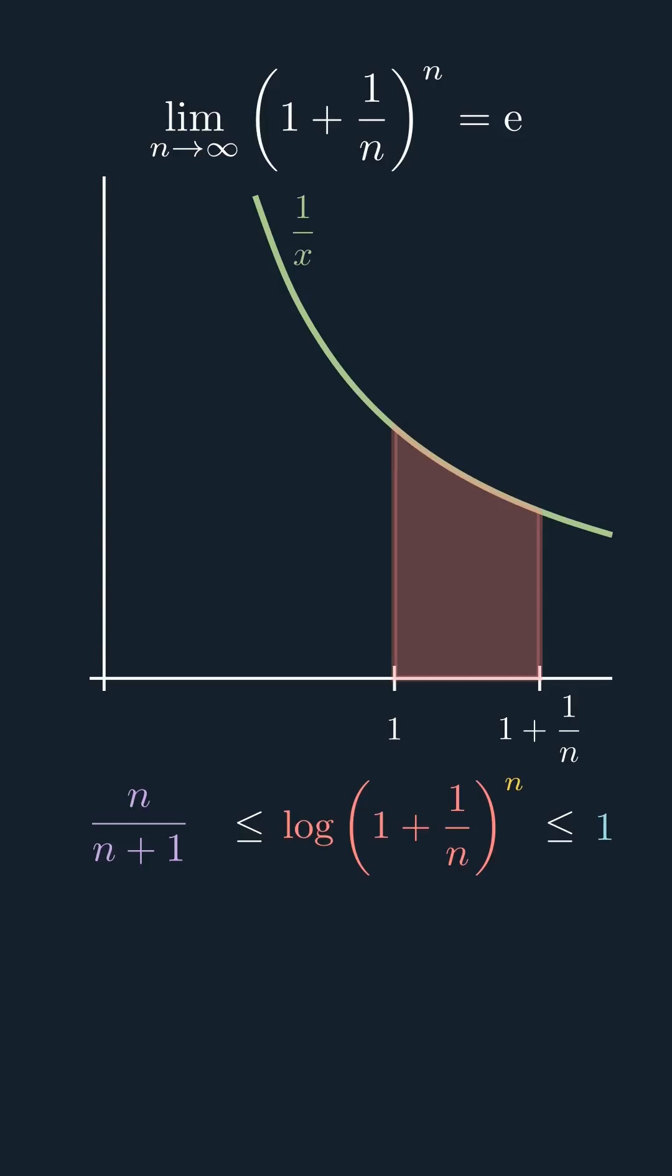Since the lower bound converges to 1, we know that the whole expression converges towards 1. Lastly, we apply the exponent function on both sides to get that 1 plus 1 over n to the power of n is equal to e.